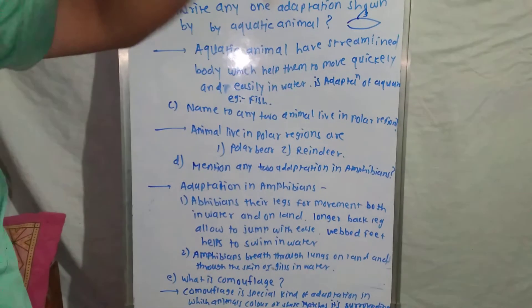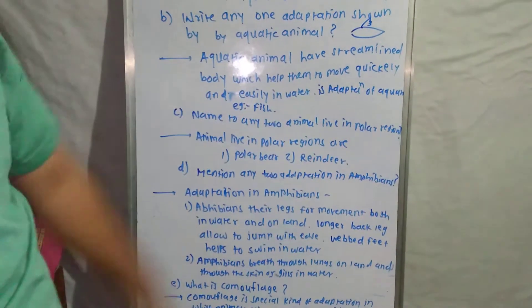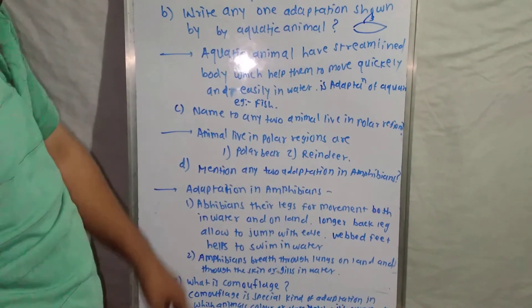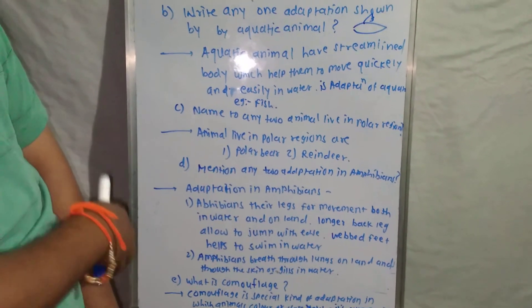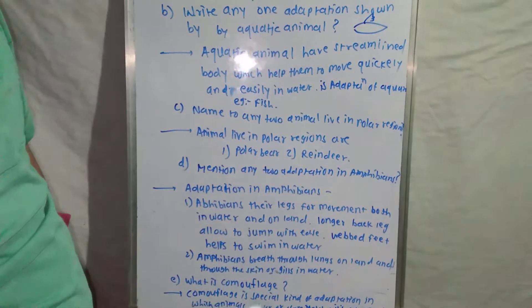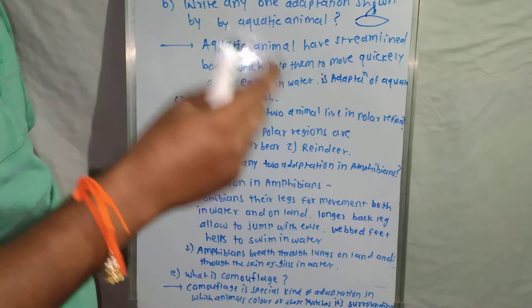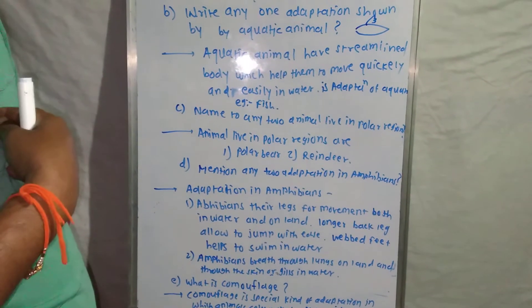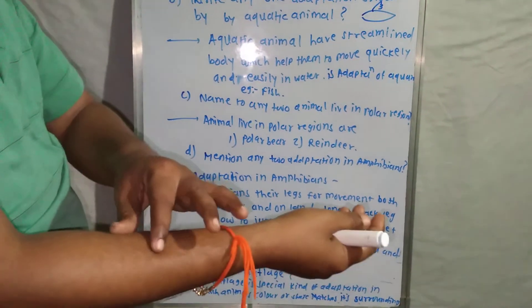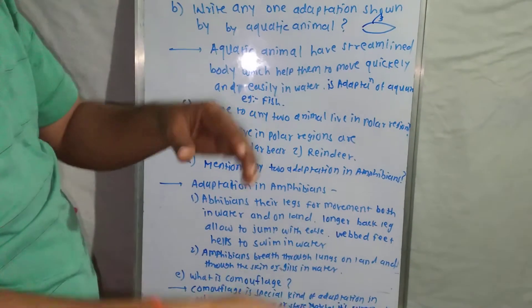These animals also have webbed paws, and with the help of those paws they can swim easily inside the water. The second adaptation is that amphibians breathe through lungs on land — for example, the frog breathes through lungs — and inside the water they breathe through the skin or gills, which are special organs.